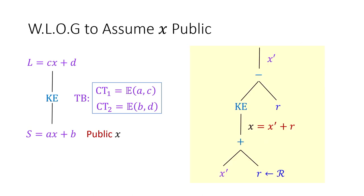We were assuming X is public, but this can be made secure: we always add a random value R to X before every key extension gadget and subtract it later. By the security of the addition gadget, R remains hidden, so it's okay to reveal X plus R to the key extension gadget.